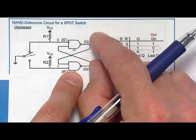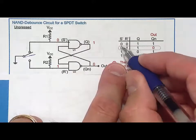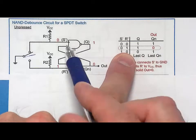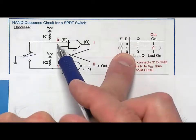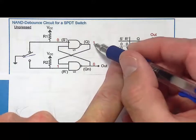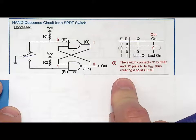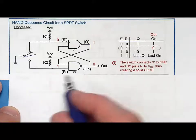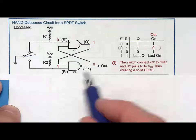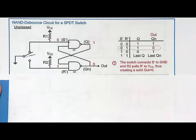Looking at the truth table for the S-bar R-bar latch: you have S-bar equals zero and R-bar equals one - that is the set state, because an S-bar latch asserts when S-bar is zero. So Q goes to one, Q-bar goes to zero, and you have a zero on the output. You built a circuit where ground in gives zero out - life is good.